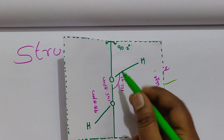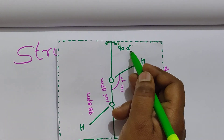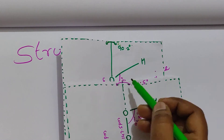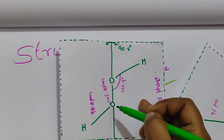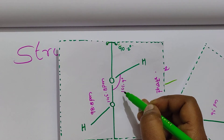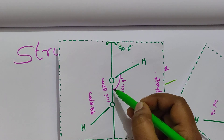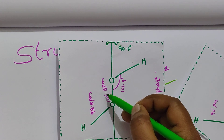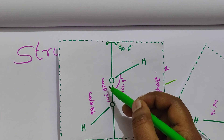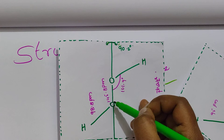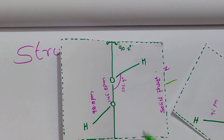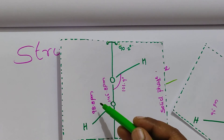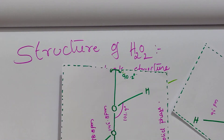In the solid phase, the bond angles are like this. The middle portion bond angle is 90.2 degrees. In the gas phase it was 111.5 degrees, so it decreases in the solid phase. The O-O-H bond angle is 101.9 degrees. The O-O bond length is 145.8 picometers, and the O-H bond length is 98.8 picometers in the solid phase.